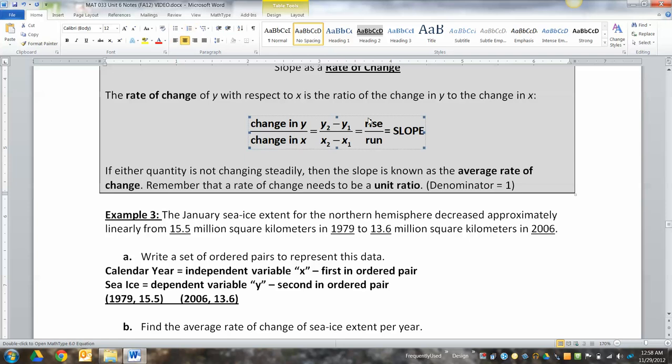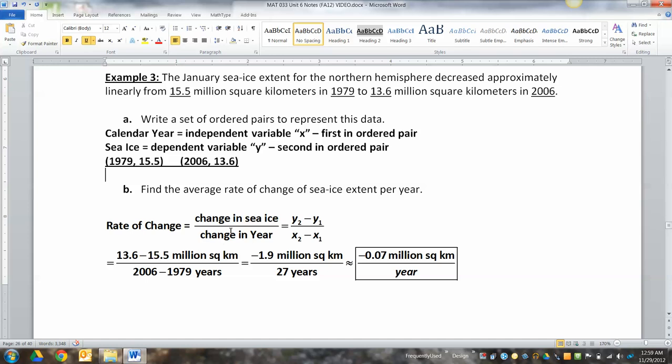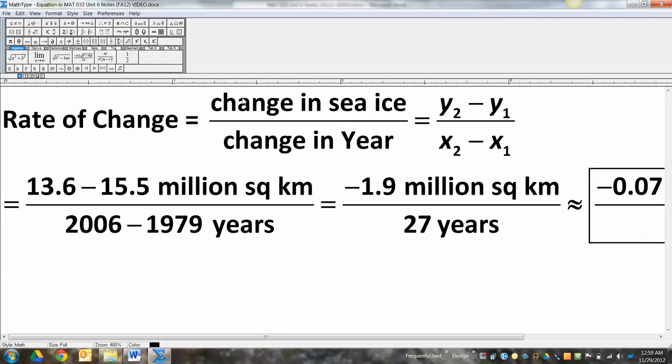Then they want us to find the average rate of change. Okay. Well, the average rate of change is this lovely formula up here. We need to find the change in Y over the change in X, but Y is sea ice and X is calendar year. Right? So what we're going to do is we're going to take the change in the sea ice and divide it by the change in year, and I put the little formula up there.